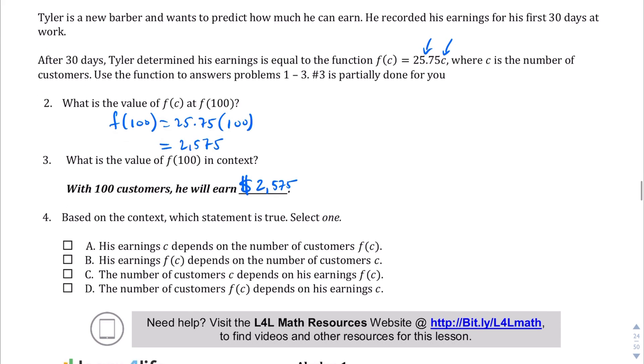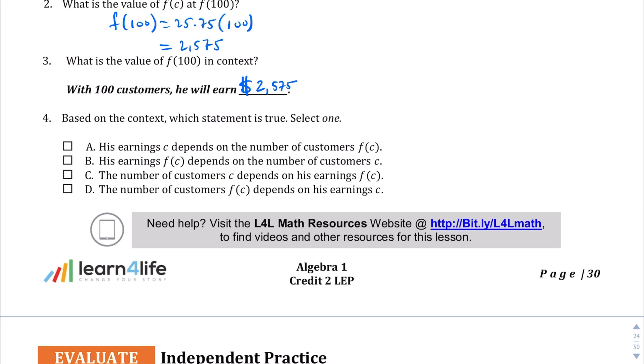Okay, based on the context, which statement is true? We're going to select only one. So we have A, B, C, and D. Let's see: choice A, "his earnings c depends on the number of customers." I don't know about that one. Let's keep trying the other choices there. Choice B, "his earnings f(c)..." Okay, so one is definitely not true because it's not in function notation. First of all, c is not earnings, c is the number of customers, so it's not A.